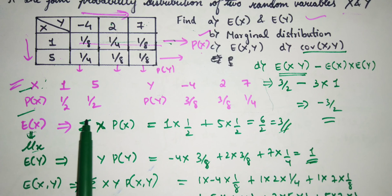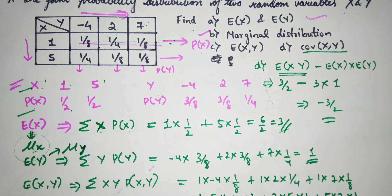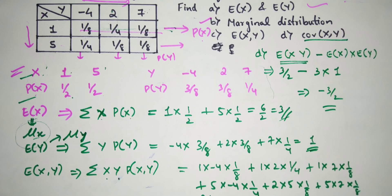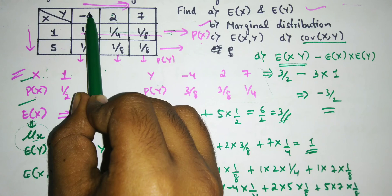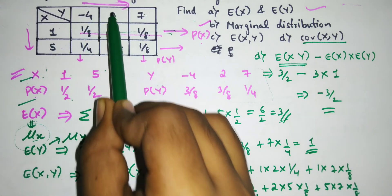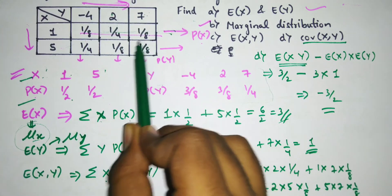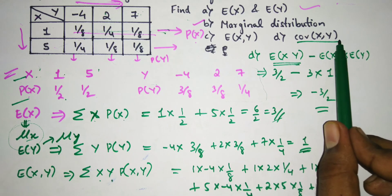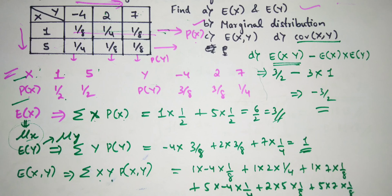From the marginal distribution table we calculate E(X) = summation of x·P(x), also denoted μ_x, and E(Y) = summation of y·P(y), also denoted μ_y. For E(XY), the formula is summation of x·y·P(x,y), calculated directly from the joint distribution table. Finally, covariance of (X,Y) = E(XY) - E(X)·E(Y), and substituting the values gives us the answer.